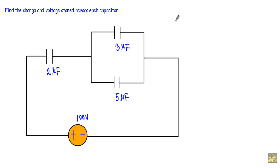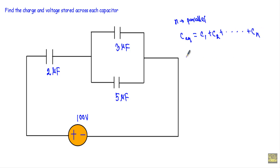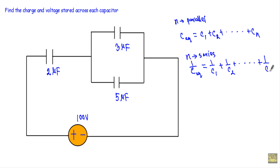When we have n capacitors connected in parallel, the equivalent capacitance is simply C1 plus C2 up to Cn. When capacitors are connected in series, the reciprocal of the equivalent capacitance equals 1/C1 plus 1/C2 up to 1/Cn. To calculate the charge across each capacitor we must know the capacitance and voltage across it, then use Q equals CV.